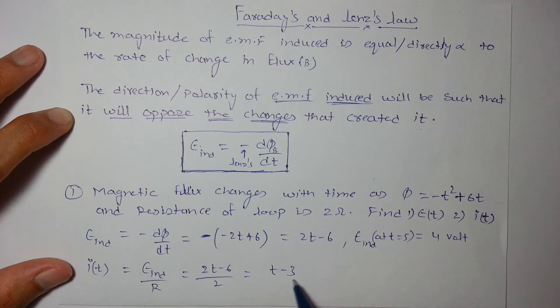So we can also say that current changes its direction at t = 3. Initially it is somewhat in negative direction and then it becomes in positive direction.